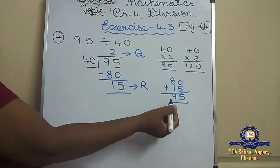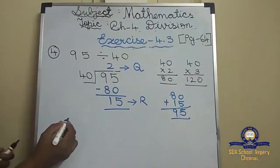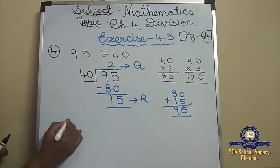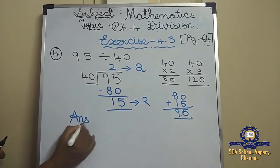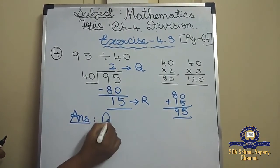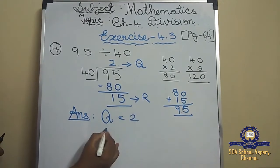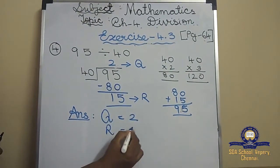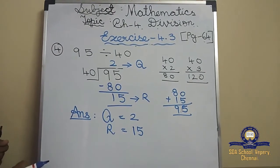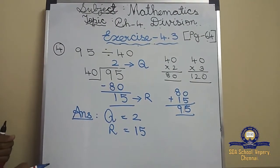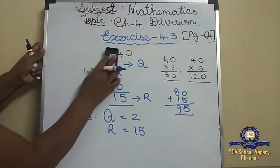The answer for the fourth sum: quotient is equal to 2 and remainder is equal to 15. Now we will move on to the fifth sum.